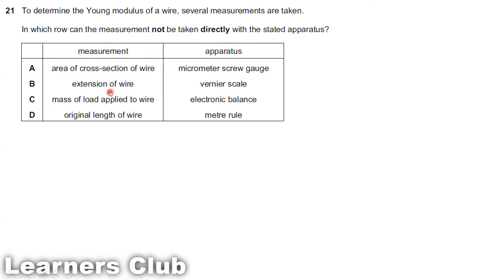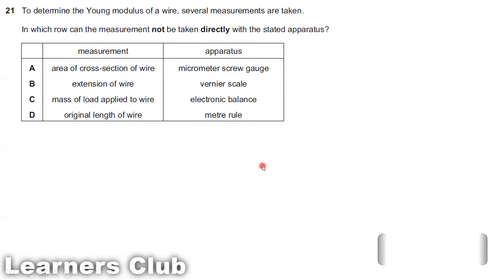Looking at options B, C, and D: the extension of a wire can be measured using a vernier scale; mass of the load can be found using an electronic balance; original length of the wire can be measured using a meter rule. So the only option is A, because area cannot be directly measured using a micrometer screw gauge. Therefore the answer is A.